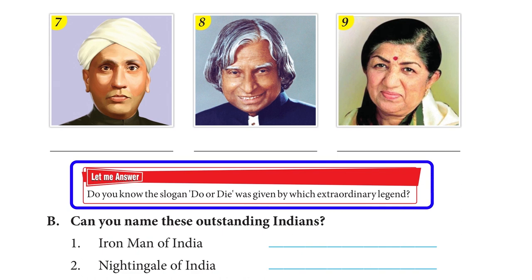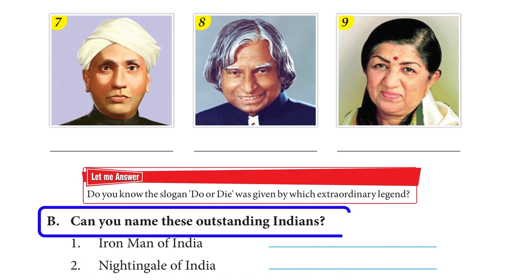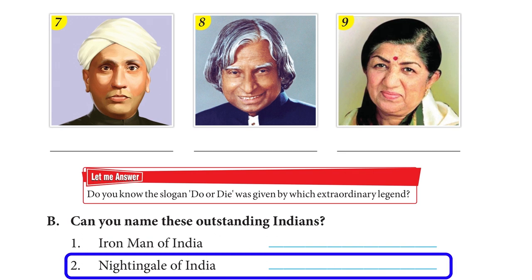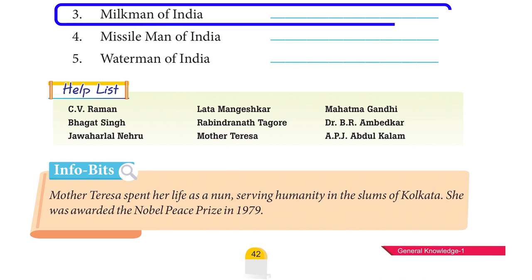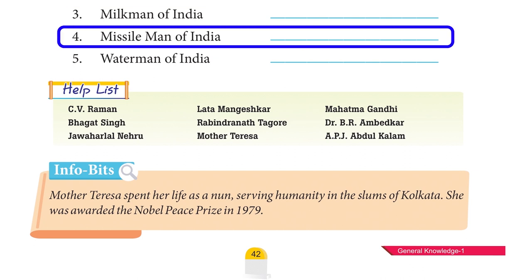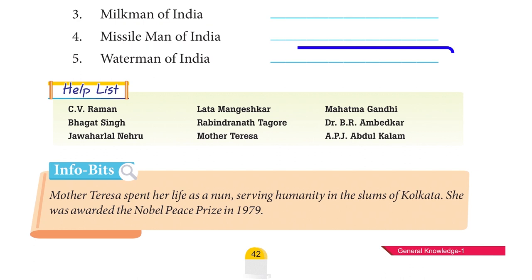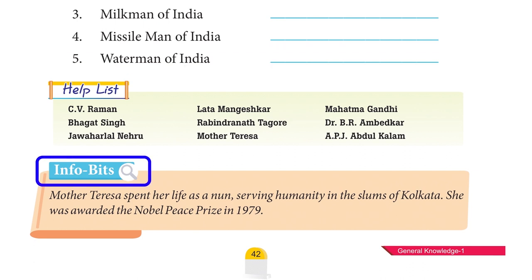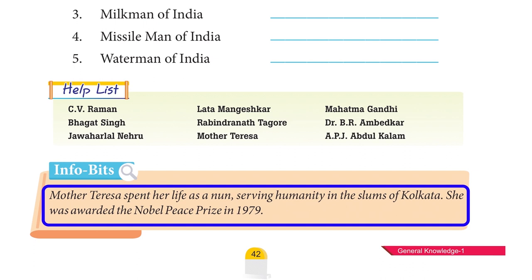Do you know the slogan 'Do or Die' was given by which extraordinary legend? Can you name these outstanding Indians? Iron Man of India — Vallabhbhai Patel; Nightingale of India — Sarojini Naidu; Milk Man of India — Verghese Kurien; Missile Man of India — Dr. A. P. J. Abdul Kalam; Water Man of India — Rajendra Singh. Info Bits: Mother Teresa spent her life serving humanity in the slums of Kolkata and was awarded the Nobel Peace Prize in 1979.